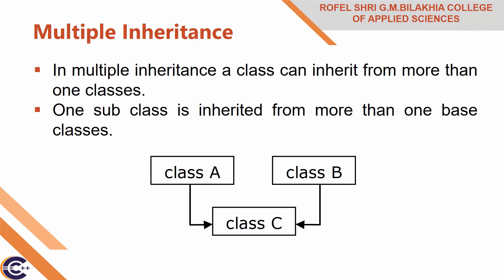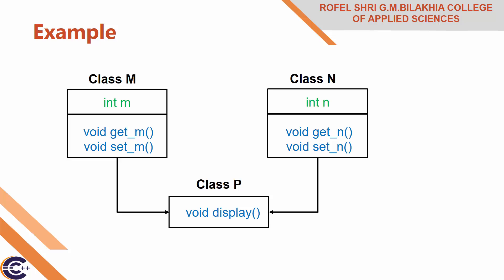Multiple inheritance allows us to combine the features of several existing classes as a starting point for defining new classes. It is like a child inheriting the physical features of one parent and the intelligence of another. As shown in the diagram, there are two base classes — base class 1 (class A) and base class 2 (class B) — and from both base classes one child class is derived, that is class C.